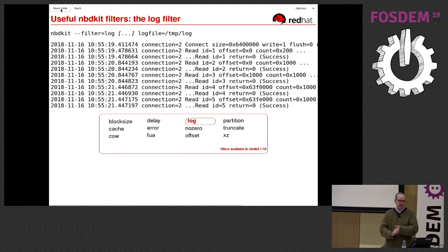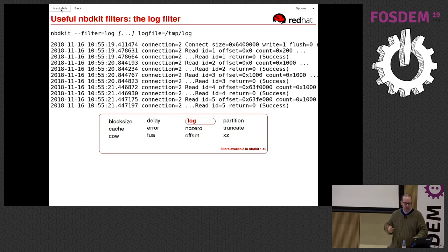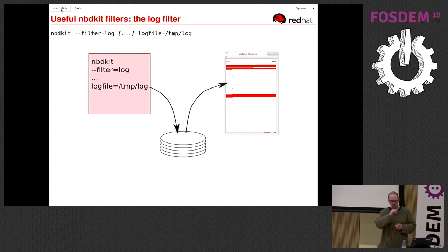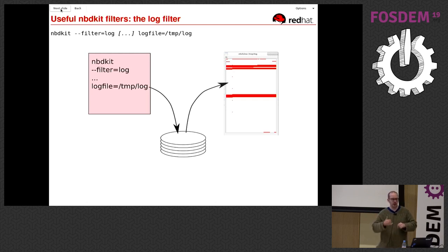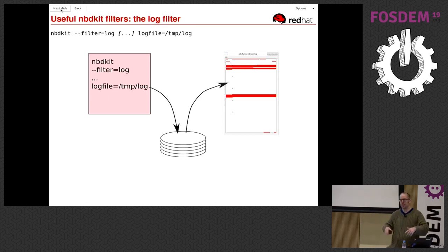The third filter is the log filter — give it a log file name and it writes requests in a structured format. In the next demonstration I'll show a graphical visualization of what happens inside file systems. nbdkit is not a graphical tool — what's actually happening is we use the log filter to write a log file, and a second graphical program I wrote for this talk tails that log file and creates the visualizations.